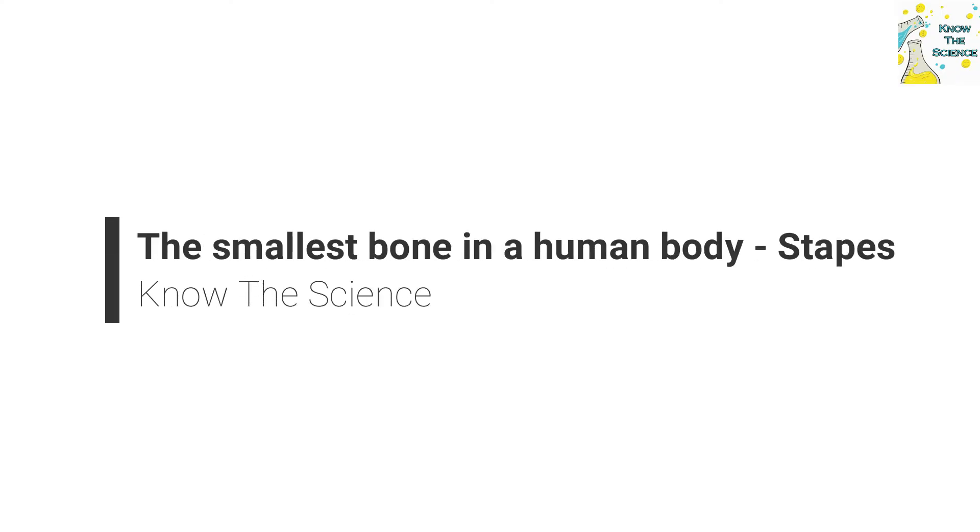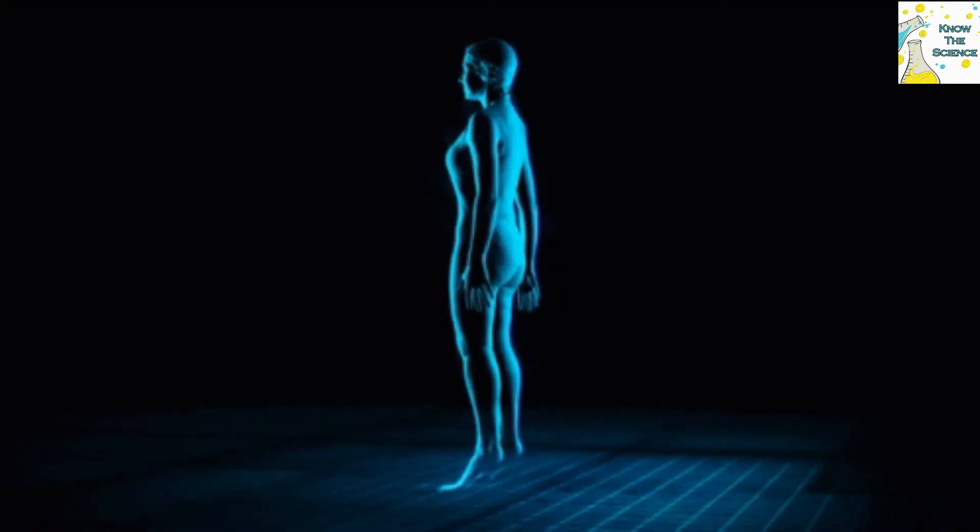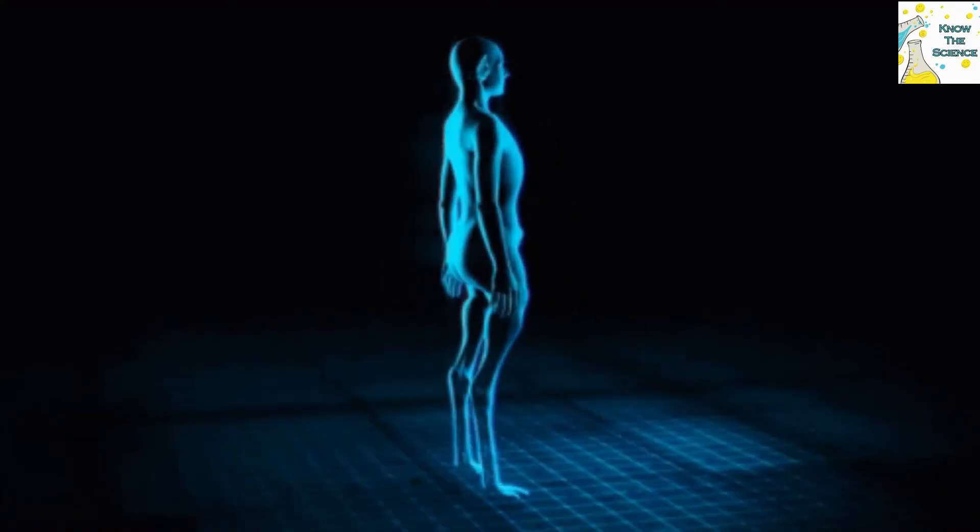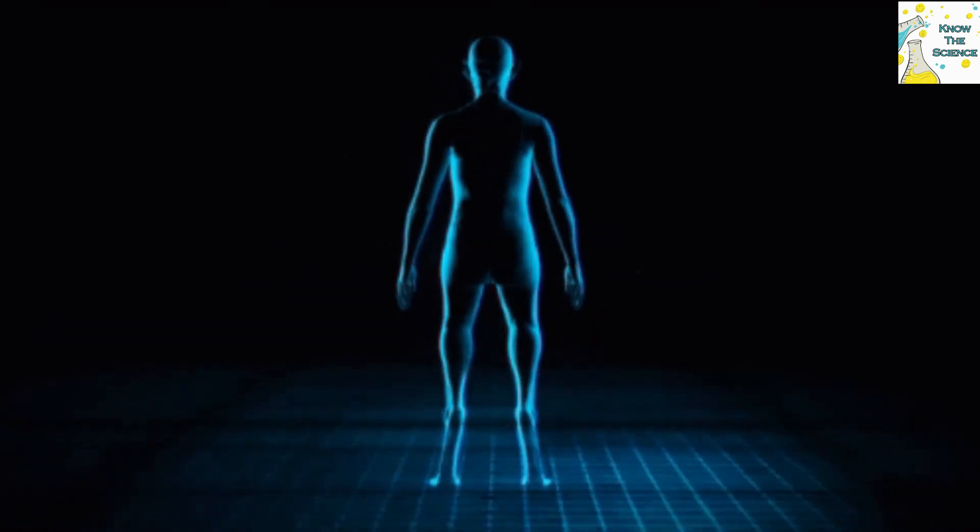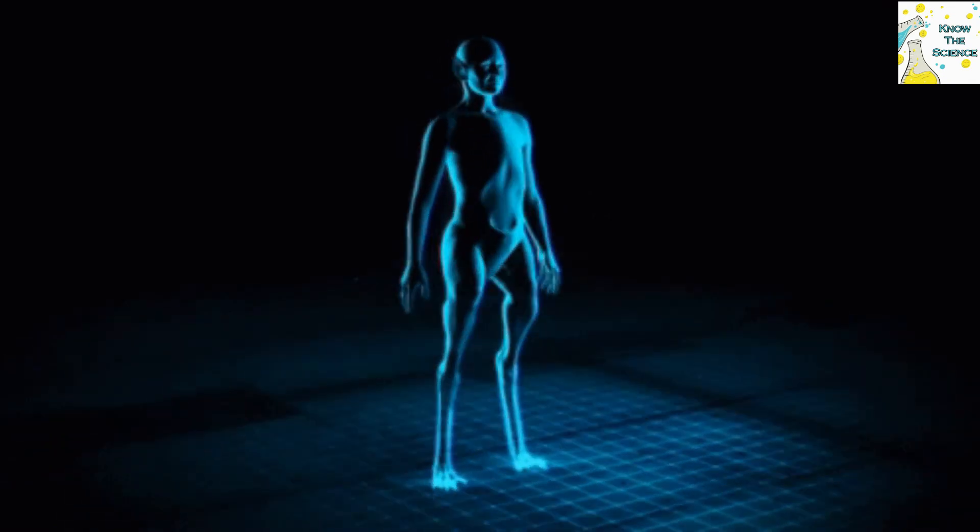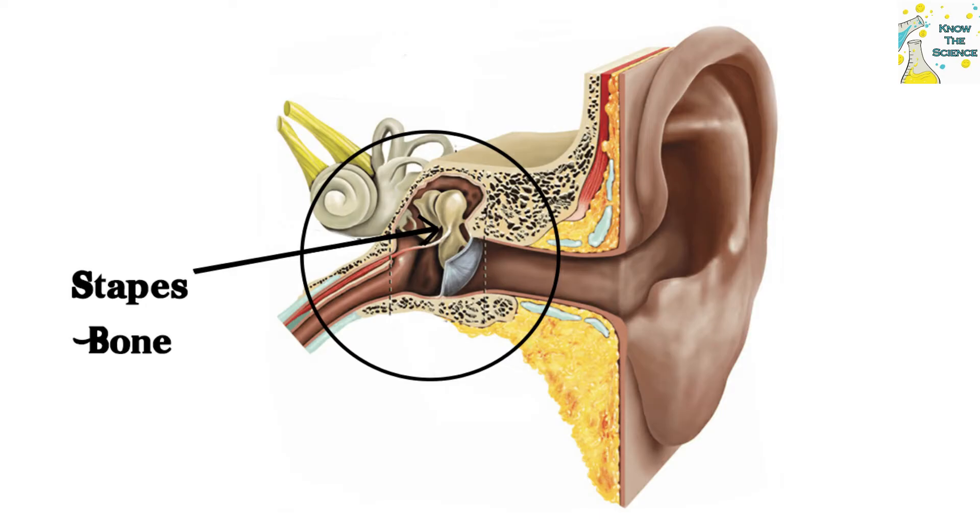The smallest bone in a human body: stapes. The human body consists of both long and short bones. Longest bone is undoubtedly the thigh bone, but interestingly the smallest and the lightest bone in a human body is stapes or stirrup found in our middle ear.